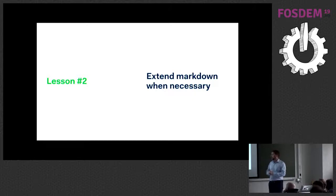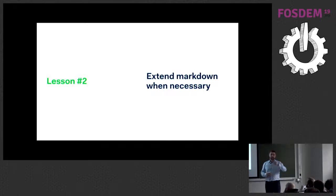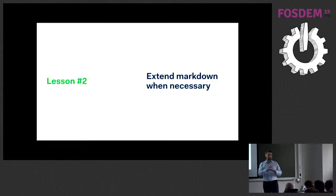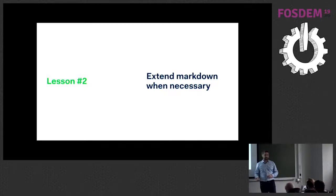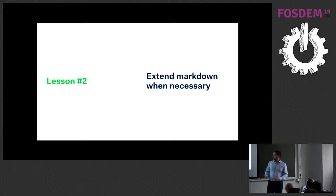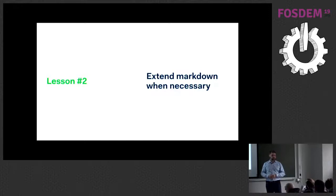Another lesson is that you can extend Markdown when necessary. With GraphCMS you have a lot of flexibility — you can introduce different forms of shortcodes. For instance, if you want to show additional info on the site or have a block of steps at the bottom of a page, you can introduce structure that isn't natural for Markdown files. You can extend it using shortcodes and metadata at the top of the page. Don't be afraid of that just because you're missing semantic content creation.